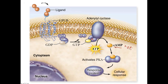Cyclic AMP is a potent second messenger. One thing cyclic AMP can do is activate protein kinase A. We discussed protein kinase C as a master phosphorylator activated by diacylglycerol and calcium. Protein kinase A is also a master phosphorylator, but in this case it is activated by binding to cyclic AMP. When protein kinase A is activated, it phosphorylates various response proteins that elicit a multifaceted cellular response.